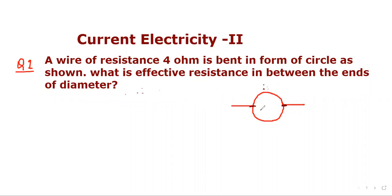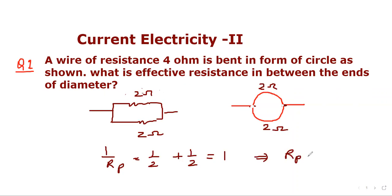So here total resistance is 4 ohm. These are the midpoints and we assume that resistance is uniformly distributed. So in half portion resistance will be 2 ohm and this will also be 2 ohm. So we can say that these two resistances are in parallel. So this is 2 ohm and this is 2 ohm and we can evaluate. So 1 upon Rp will be 1 upon 2 plus 1 upon 2. That will be 1 which implies Rp equals 1.